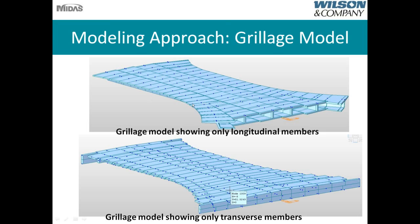Here's an overview of the grillage model. The top image shows the longitudinal members only — MIDAS allows you to take a good look at the geometry being input, and each cross-section was entered individually. Looking at the transverse members, we have the top slab, bottom slab, the end diaphragm, and the lifting diaphragm.